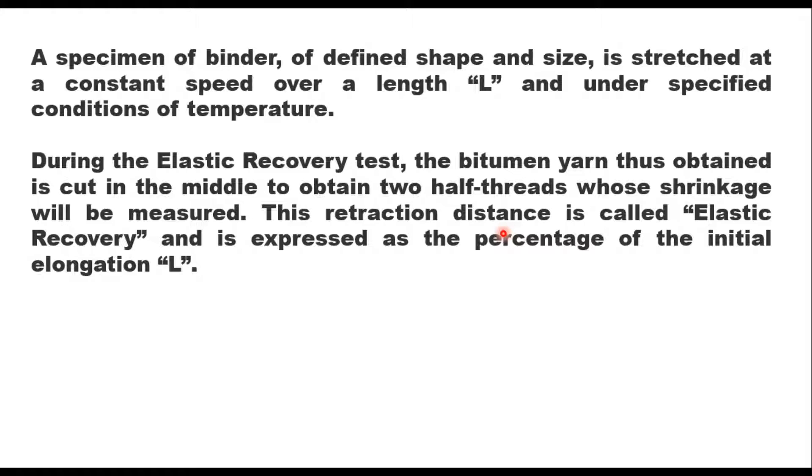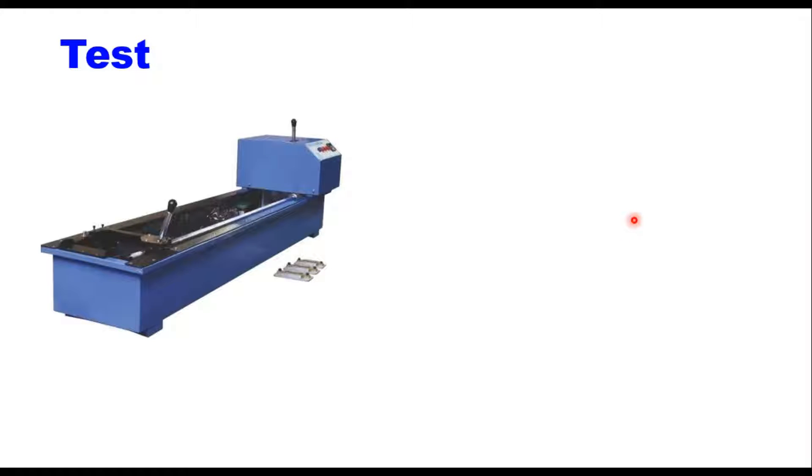For elastic recovery test, a specimen of binder of defined shape and size is stretched at a constant speed over a length L, which is generally 10 cm, under specified conditions of temperature—15 degrees Celsius. During the elastic recovery test, when the bitumen yarn achieves the target length, you cut it into two parts with scissors. Then after one hour wait, we see how much these two parts shrink. This shrinkage is basically recovery, the elastic recovery. To measure this, we use a normal ductilometer, which is a ductility machine, but the mode is slightly different.